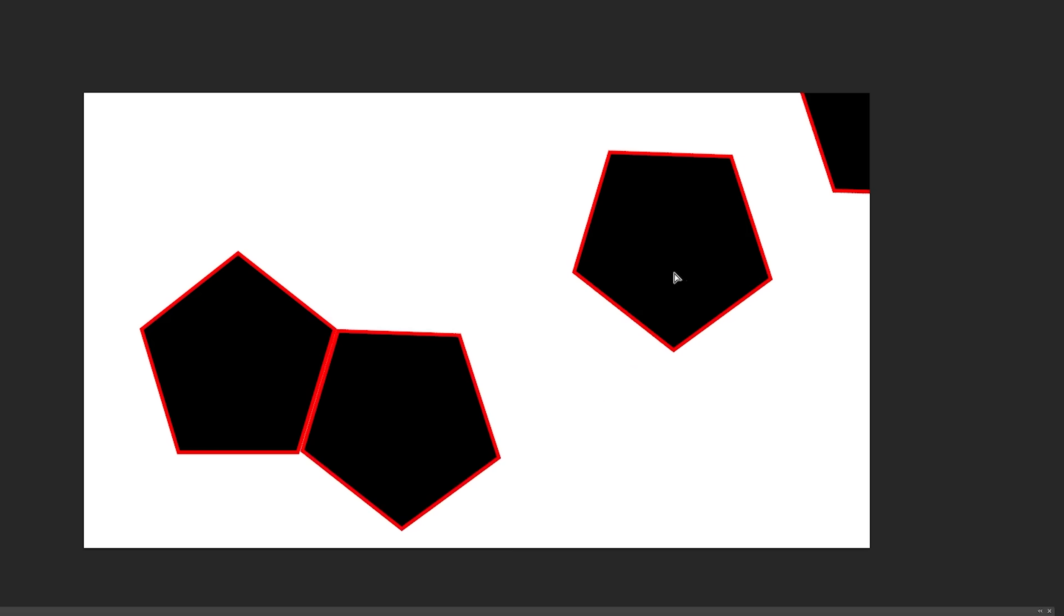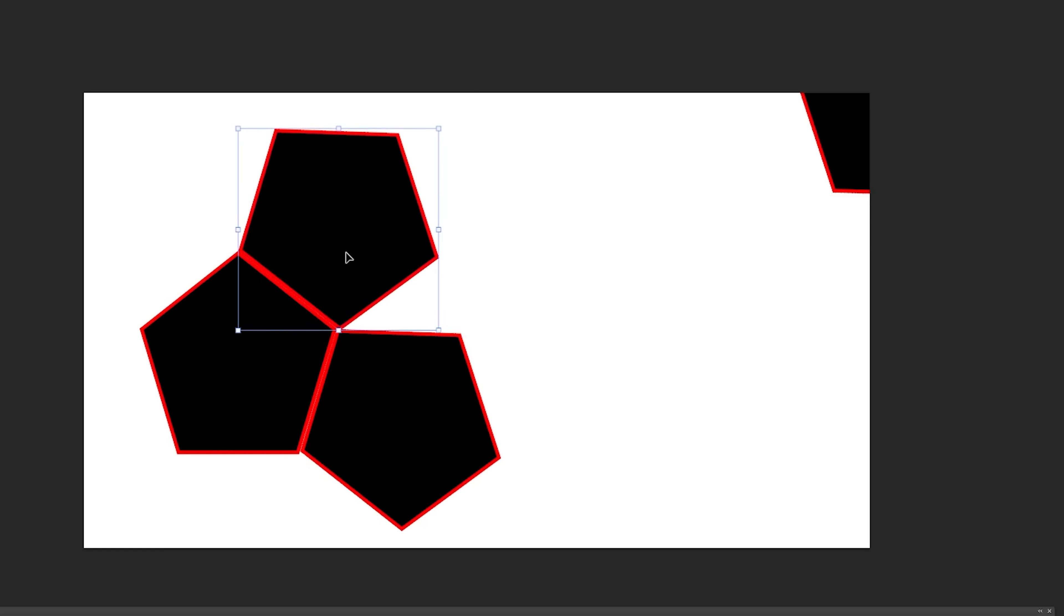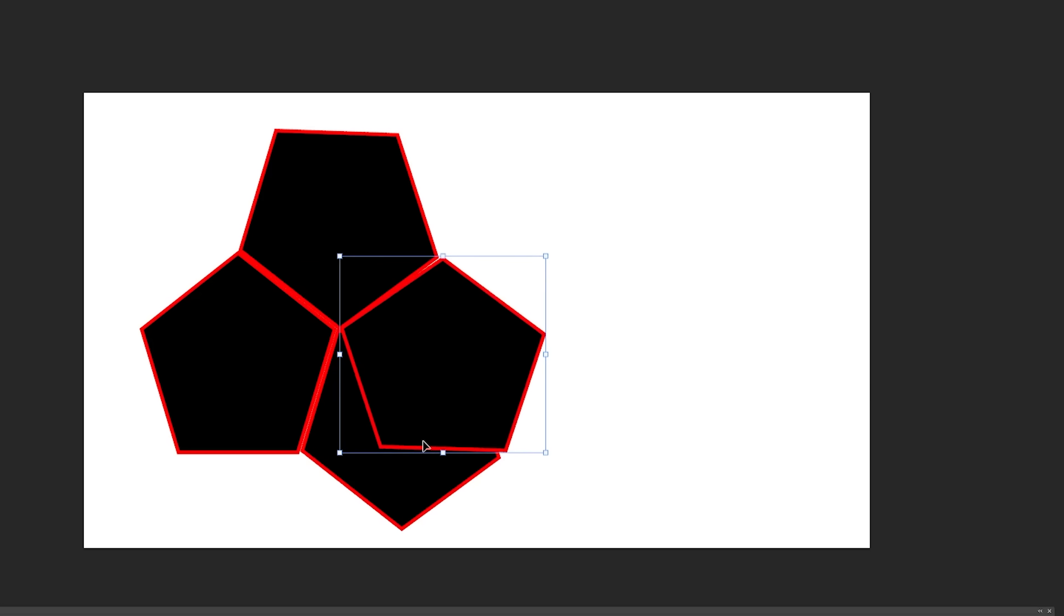So what about shapes with interior angles that add up to more than 360 degrees? Could they ever tessellate together? For example, I have a pentagon here. The interior angles of a pentagon add up to 540 degrees. So if you try to tessellate a regular pentagon, it's not going to work.